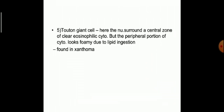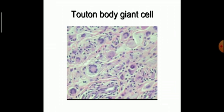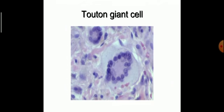Another type of giant cell is the Touton giant cell, where the nucleus surrounds a central zone of clear eosinophilic cytoplasm, while the peripheral portion of the cytoplasm looks foamy because of lipid ingestion. It is found in xanthoma. This is a picture of the Touton giant cell found in xanthoma.